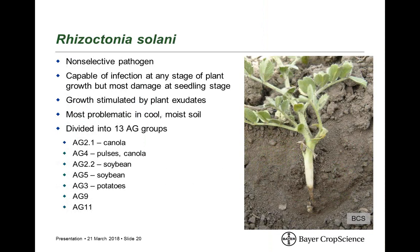From a Rhizoctonia perspective, it's also non-selective — there's probably a strain that affects virtually every crop, though fortunately not all strains are present in Canada. Rhizoctonia can infect at any plant growth stage but does the most damage at the seedling stage. Plant exudates attract Rhizoctonia to the roots. It tends to be more problematic in cool to moist soil — not as wet as Pythium prefers, but it doesn't proliferate in dry soils like some Fusarium can. Similar to Fusarium, there are various strains or AG groups within Rhizoctonia, with individual groups having different crop preferences. They can survive and overwinter on residues from different crops, so crop rotation remains important to manage the inoculum load of individuals that prefer pulse crops.